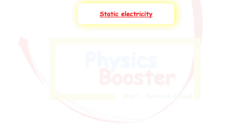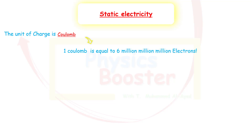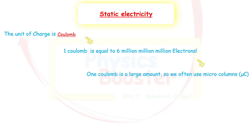Let's talk about some facts about charges. There are positive and negative charges, and we know how they relate to each other. The unit of charge is called the Coulomb, named after a famous scientist. One Coulomb is approximately six million million million electrons — if you could gather that many electrons, you would have a charge of one Coulomb. Since one Coulomb is a large amount, we often use micro-Coulombs, and we must remember that one micro equals 10 to the power of negative six.